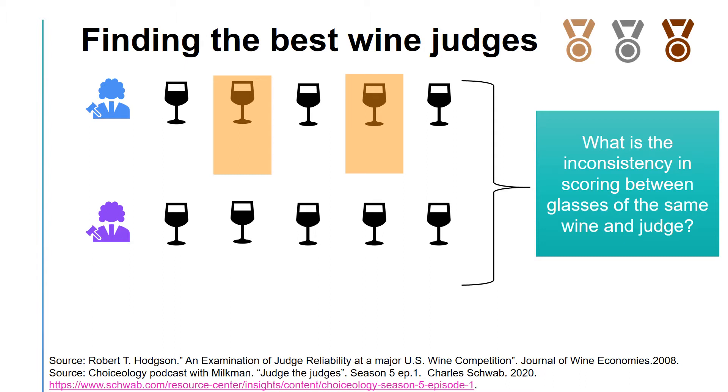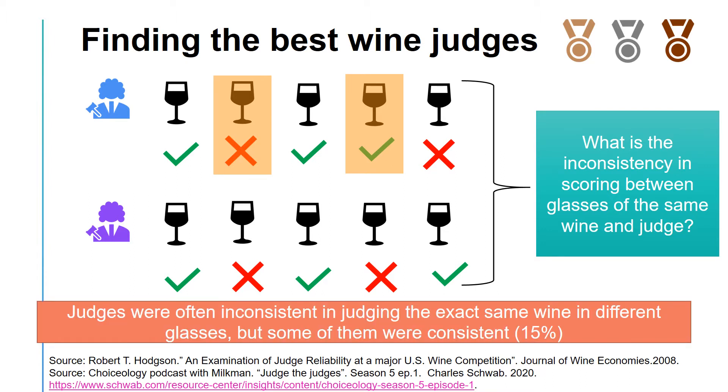With this plan, they could then measure any inconsistencies in the scoring by comparing a judge's original score on a specific glass and their second score on that same glass. They discovered that the judges were often inconsistent. About 15% of those judges did well, meaning that they have high consistency. 15% did very poorly, and the remaining 70% were in the middle.